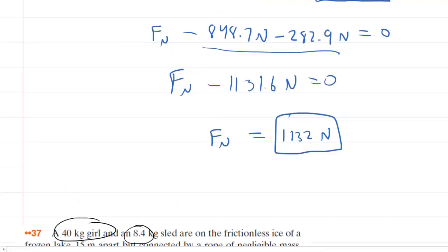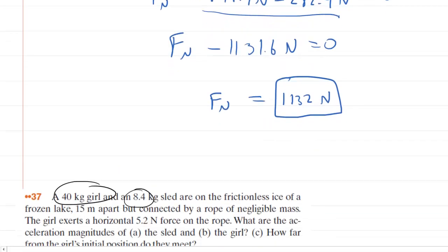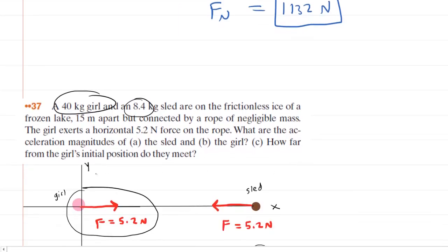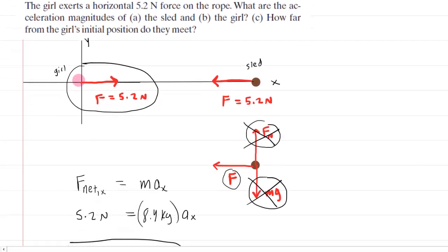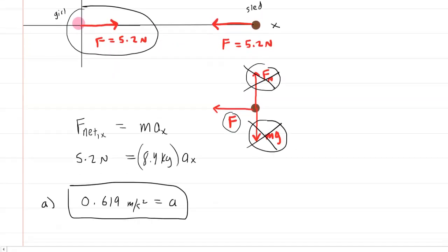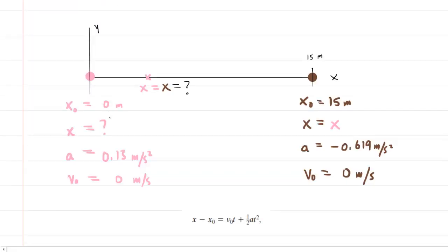Now we move on to part C, which wants to know how far from the girl's initial position they meet. We redraw the picture below. Here is the picture with important information listed for each object. Starting with the girl — since she starts at the origin, her initial x coordinate is 0 meters.